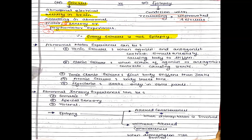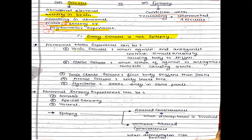Now let us discuss the various motor experiences, sensory and psychomotor experiences. So motor experiences — we come across these terms frequently: what is a tonic seizure, what is a clonic seizure, what is a tonic-clonic seizure, and what is atonic and myoclonic?